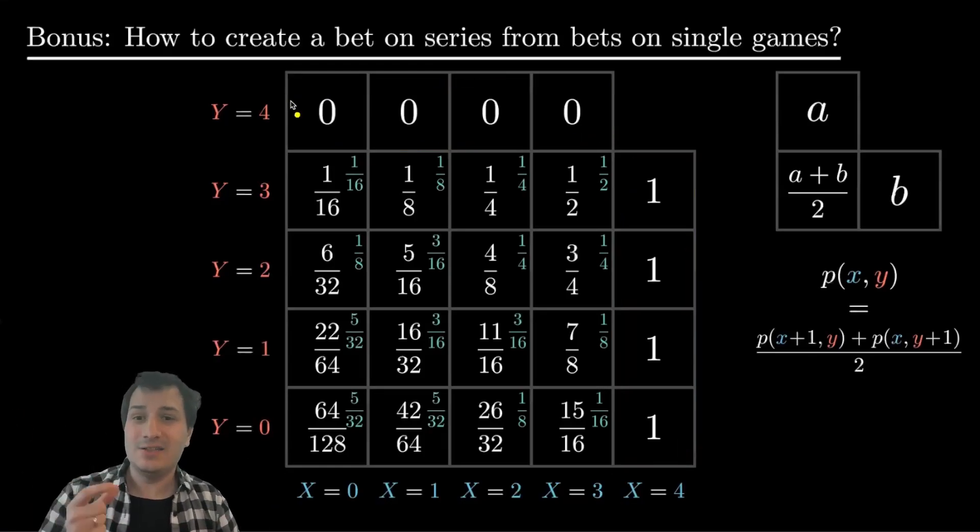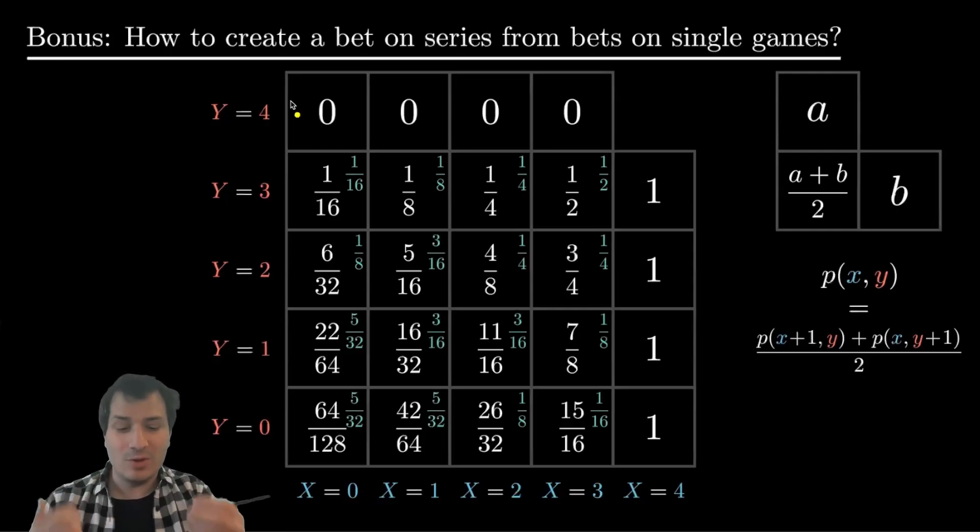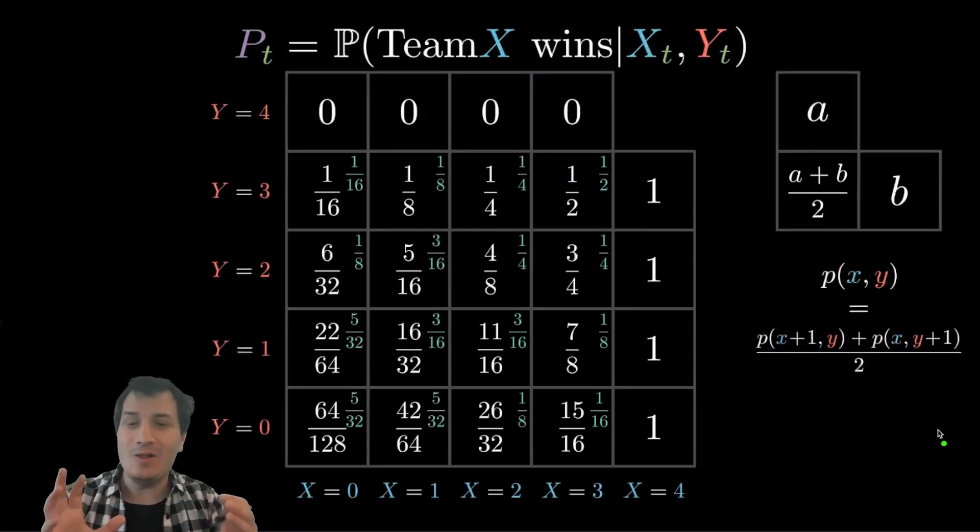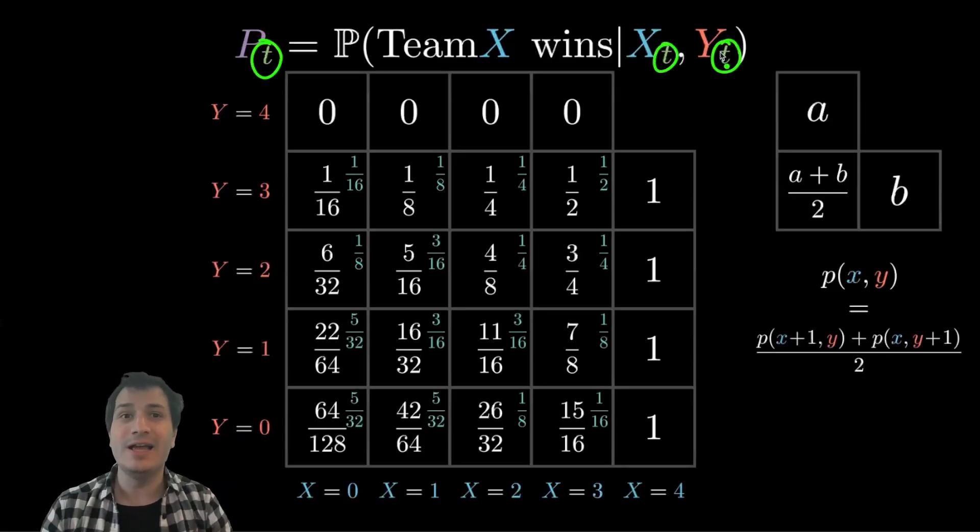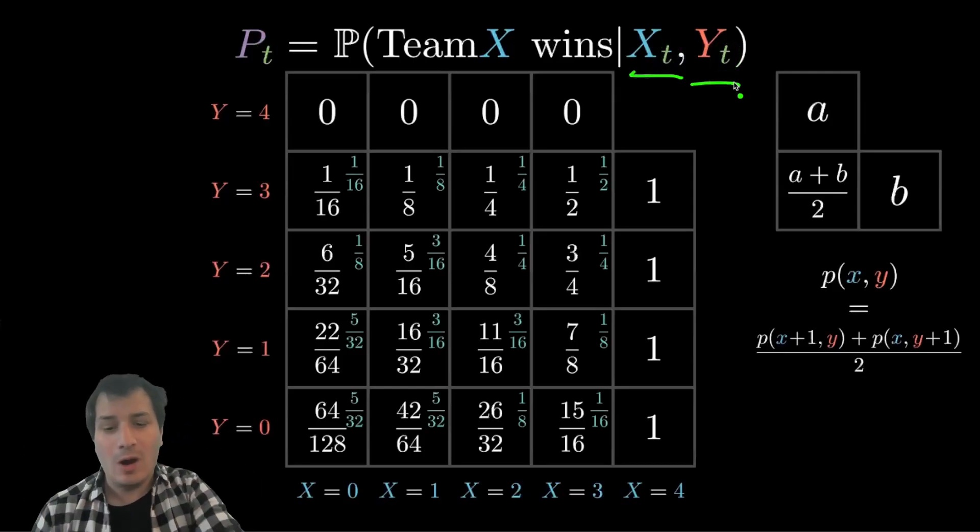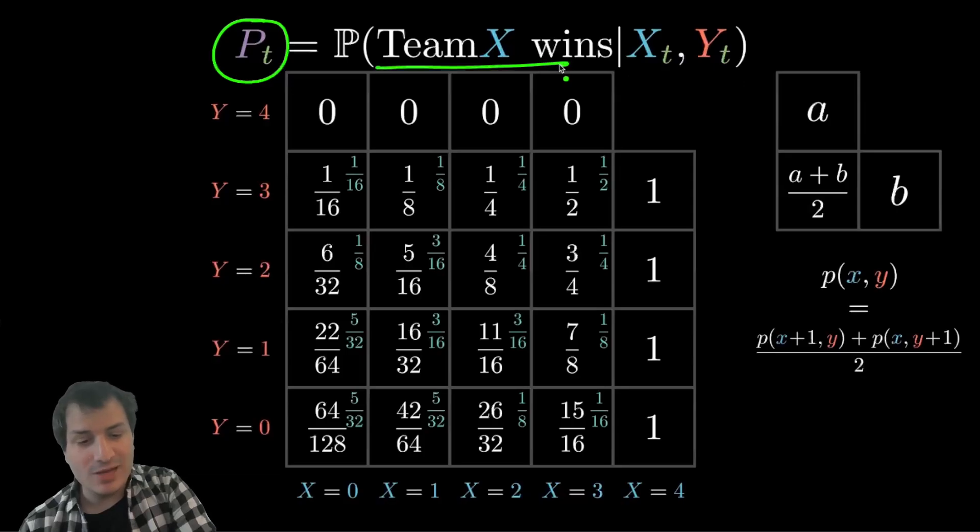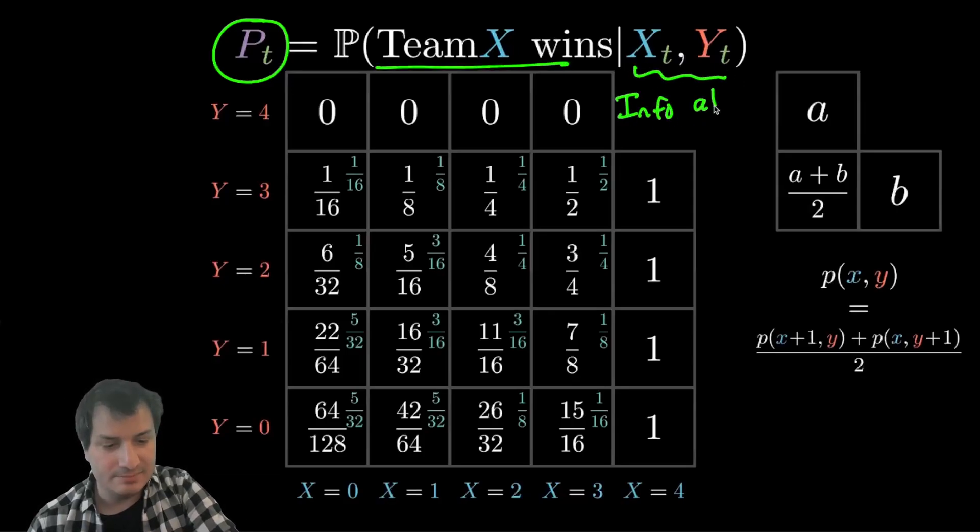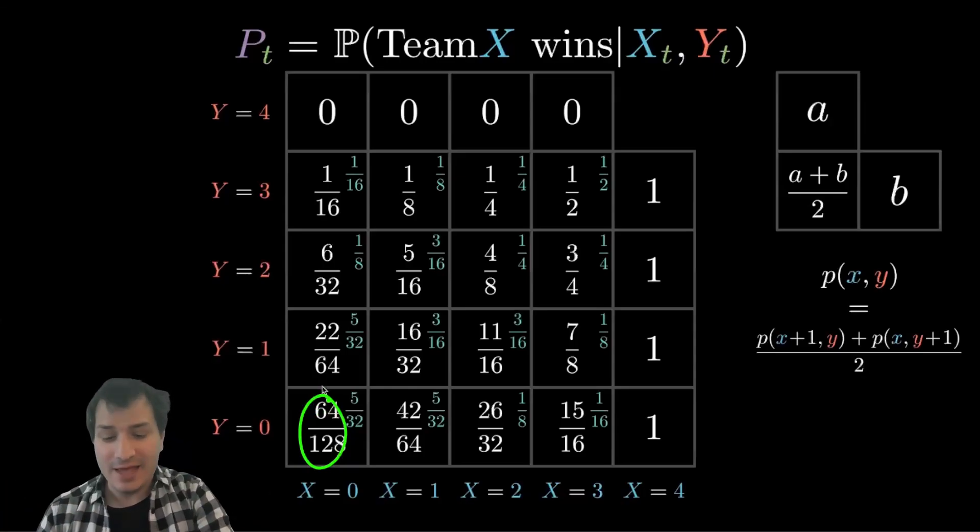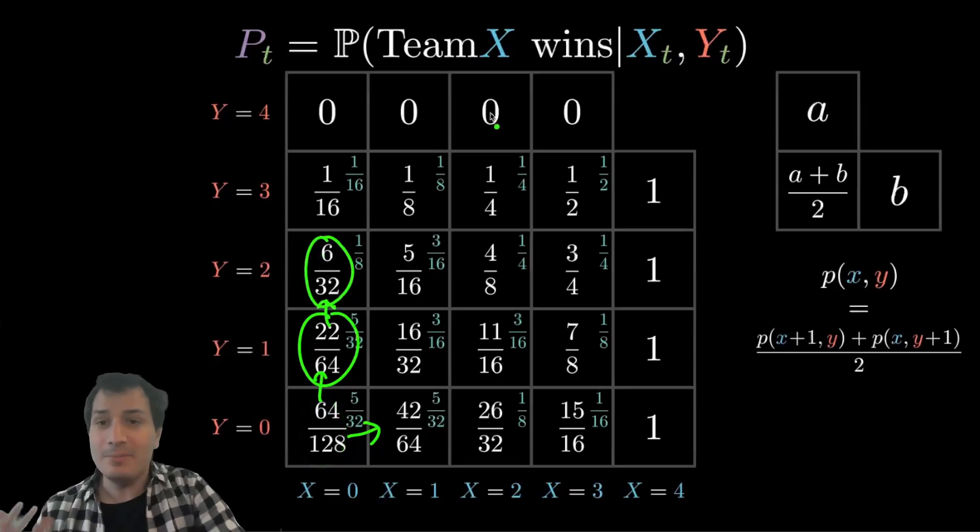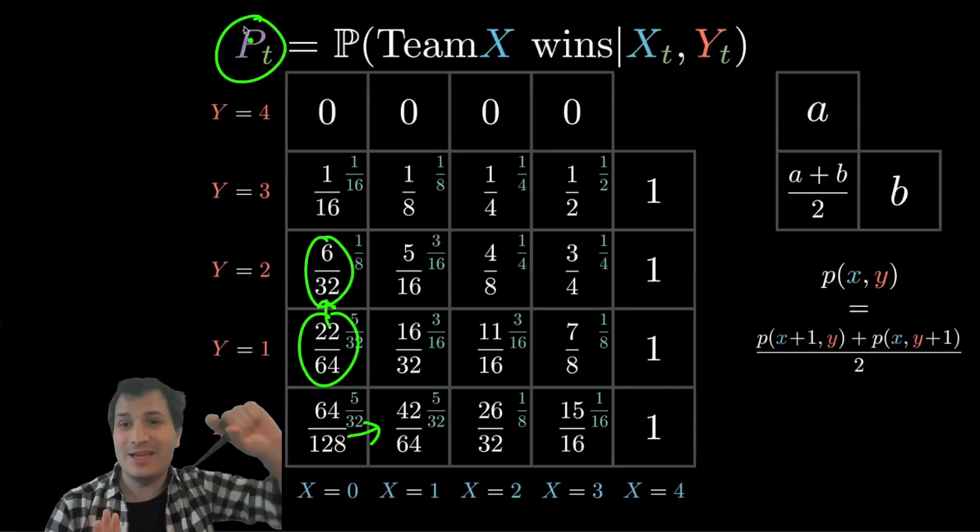And the sequence of bets is very closely related to the following random object. You can make this all stochastic processes that are functions of time. So you can think of time as the number of games into the series we are. And xt and yt, those are random sequences, which are the score of team x and team y at time t in the sequence. And you can make this new random sequence called p of t, which is the probability that team x wins given the information at time t. So this information at time t is just what is the score for team x and team y respectively, t games into the sequence. So p now is really these numbers at the beginning of the series, p is a half, and then p is going to evolve according to these numbers. So maybe it'll become 22 over 64, and then it'll become 6 over 32. The numbers in the grid are the values of this pt, and pt is evolving as a random walk through this grid.